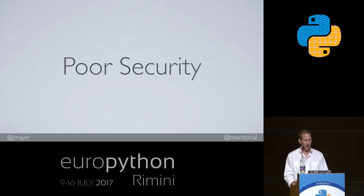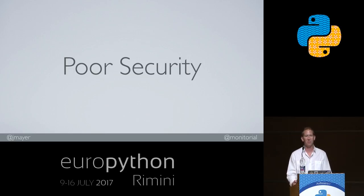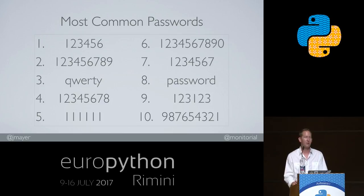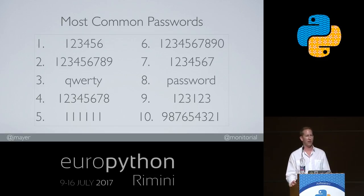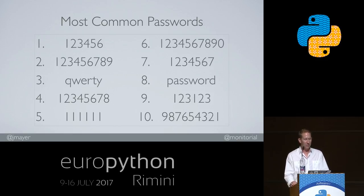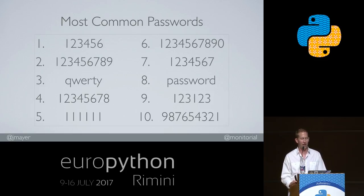Let's start by looking at the security side. One of the most important reasons for the poor security of passwords is that people choose really bad passwords. The most common password — 1, 2, 3, 4, 5, 6 — accounts for 17%. That's nearly one fifth of all passwords used by human beings that are protected by this password. This is bad because it is trivial to brute force. But why would you even bother brute-forcing when they're so easy to guess and you can just look them up in a password list?